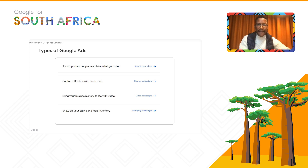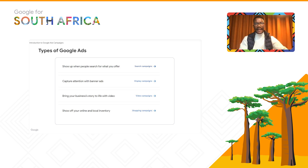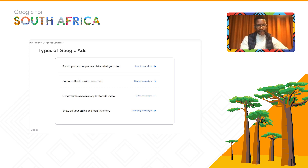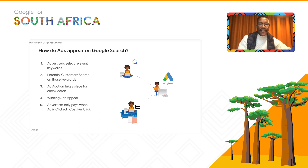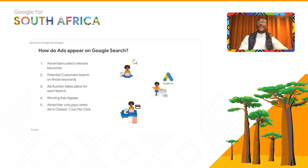These are the types of Google Ads available. If you want to show up when people are searching for what you offer, that's a search campaign. To capture attention with banner ads, use display campaigns. To bring your business story to life with video, use video campaigns. And to show off your online and local inventory, use shopping campaigns. You can advertise on Google Ads to ensure people searching for your services can see your ads, increasing traffic via search, display, shopping, and YouTube.